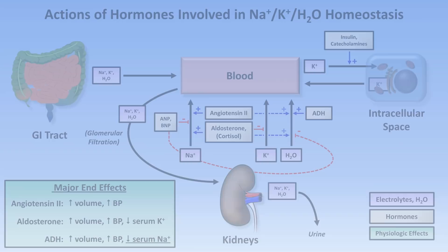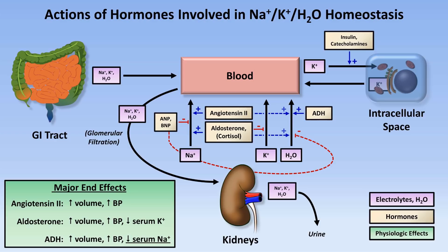Moving on to the etiologies, let's take another look at this diagram, which summarizes the action of hormones involved in salt and water balance. As discussed in the last two lectures, angiotensin, aldosterone, cortisol, ANP, and BNP all impact both sodium and water reabsorption in the renal tubules in the same direction, and also to relatively similar degrees. Therefore, primary derangement of any of these hormones rarely produces major perturbations in the body's sodium concentration.